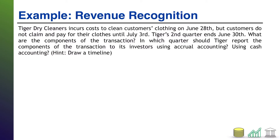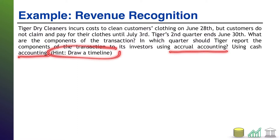Which quarter should Tiger report that economic activity — that revenue? Should it be in Q2, which ended in the middle of this problem, or should it be in Q3? I want to know the answer under both accrual accounting and cash accounting. A hint: draw a timeline, and that's where I'm going to kick this off.